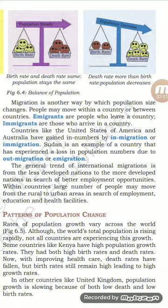The general trend of international migration is from the less developed nations to the more developed nations in search of better employment opportunities. अंतर्राष्ट्रीय प्रवास की सामान्य प्रवृत्ति यह है कि लोग अच्छे आर्थिक अवसरों की खोज में कम विकसित राष्ट्रों से अधिक विकसित राष्ट्रों में चले जाते हैं। Within countries, large numbers of people may move from rural to urban areas in search of employment, education and health facilities. देशों के अंदर बड़ी संख्या में लोग रोजगार, शिक्षा और स्वास्थ्य सुविधाओं की खोज में ग्रामीण क्षेत्रों से नगरीय क्षेत्रों की ओर चले जाते हैं।